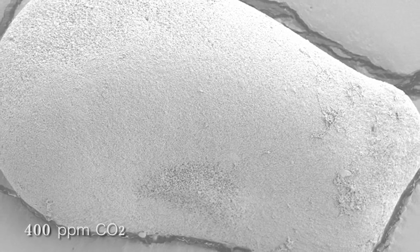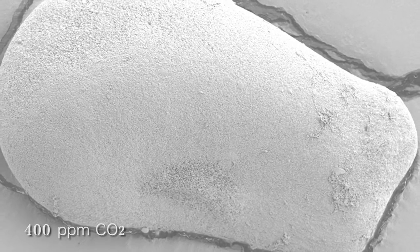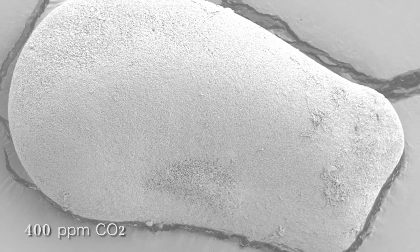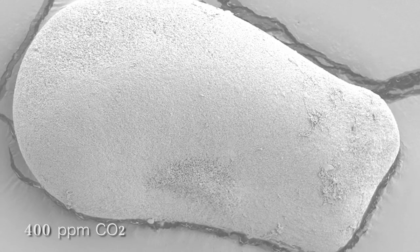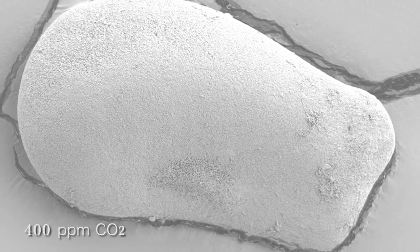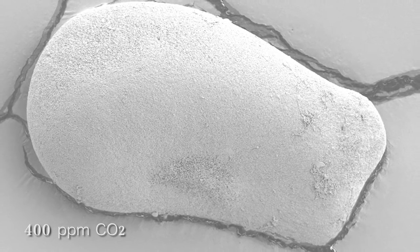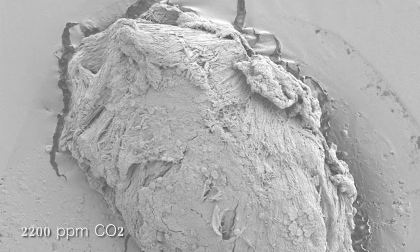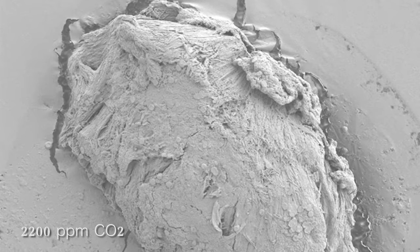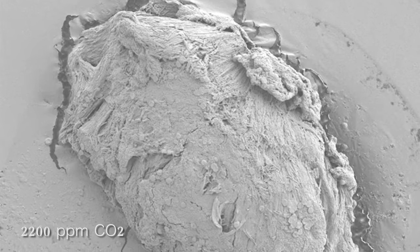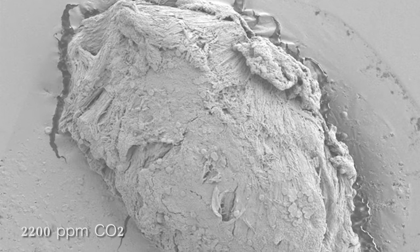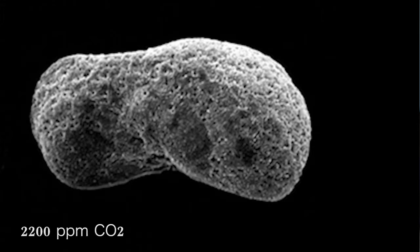A normal statolith basically starts growing from a center point, grows outwards, and puts out rings like a tree ring in daily increments. In a squid raised in high CO2, we don't see that — their crystals are laid out in a very disorganized fashion. It's more porous; it looks more like a sponge with a lot of holes in it.